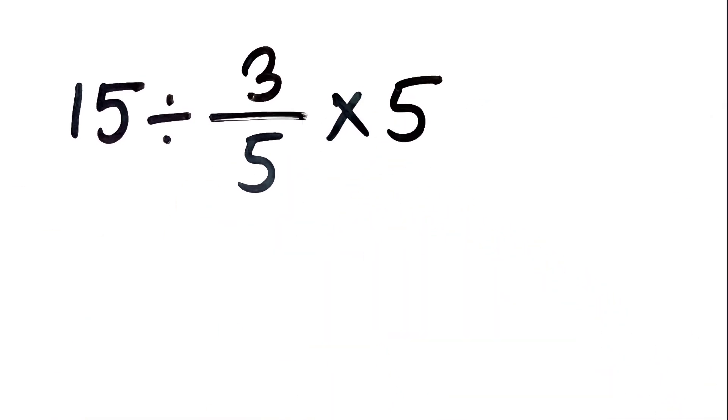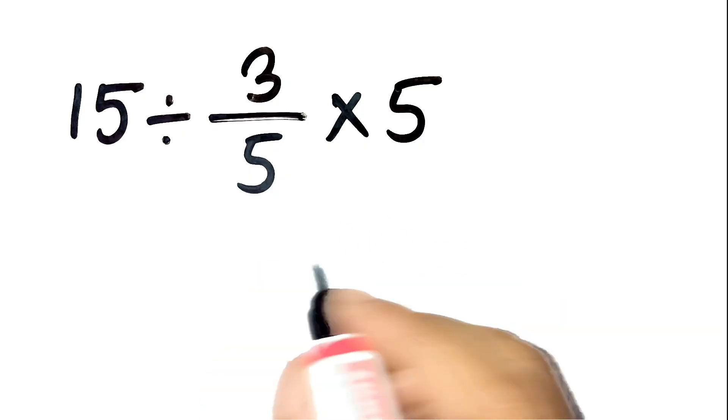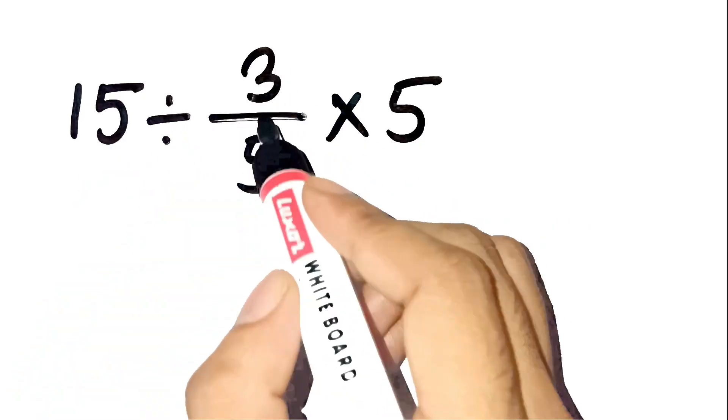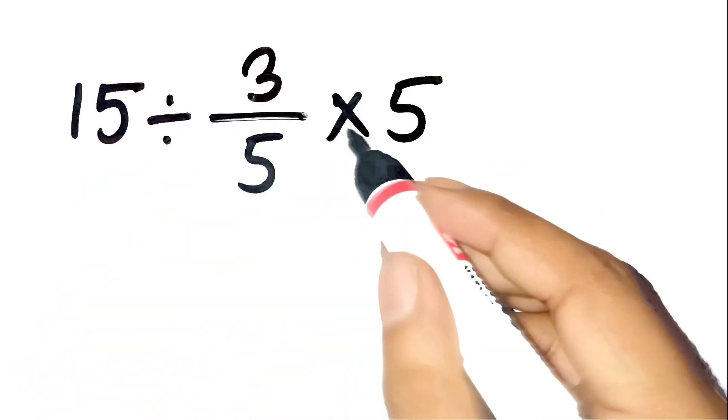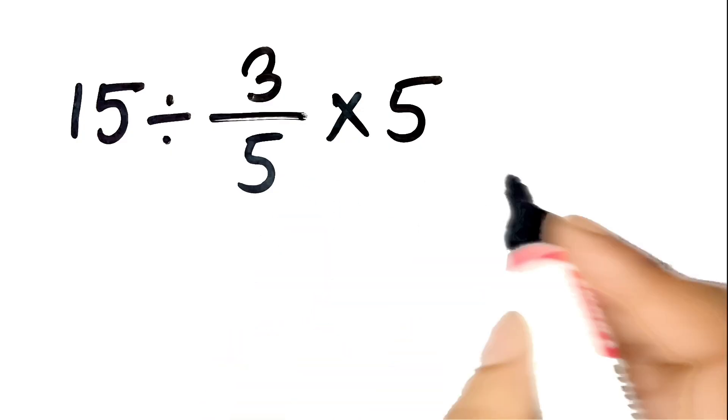Alright, here's the proper way to think about this. We have 15 divided by 3 over 5 times 5. First, remember PEMDAS.